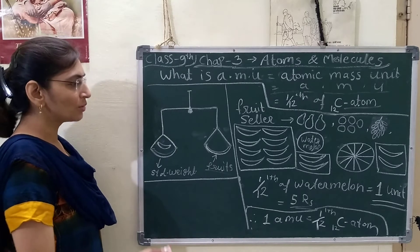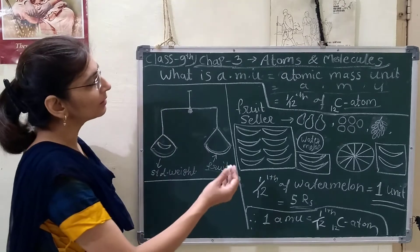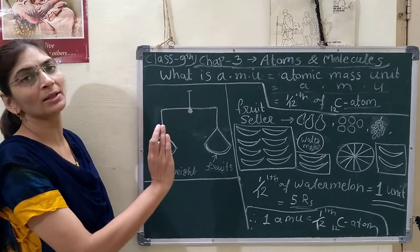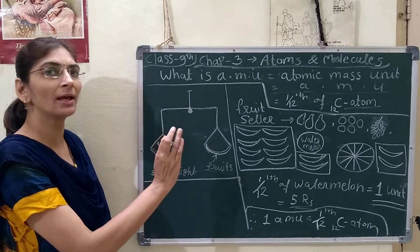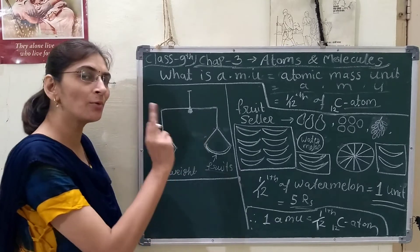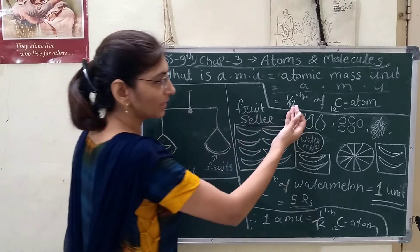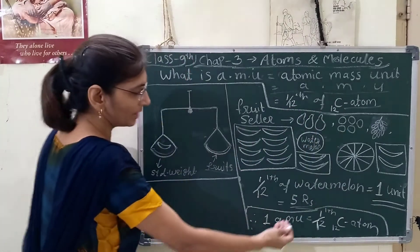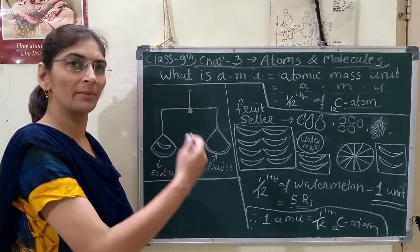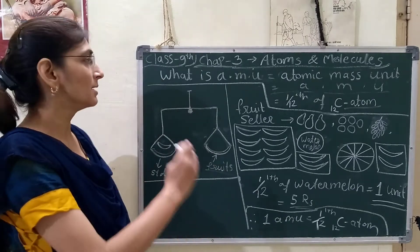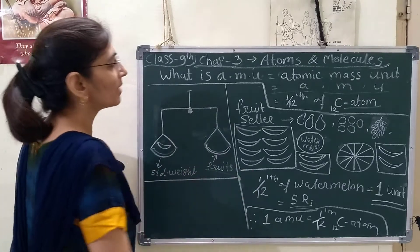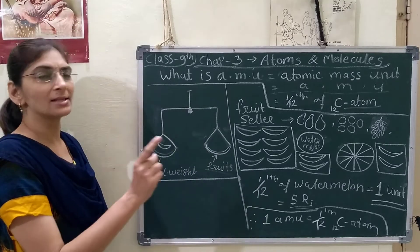Carbon's atomic mass is a whole number, which is why it was chosen as the standard reference for defining the atomic mass unit.